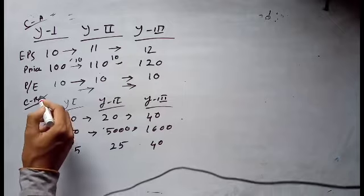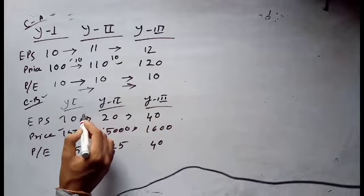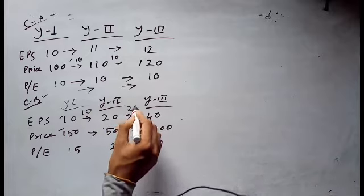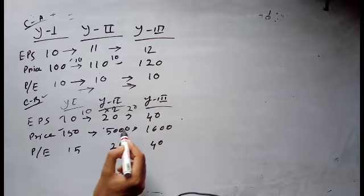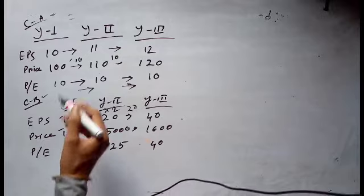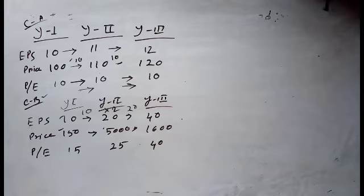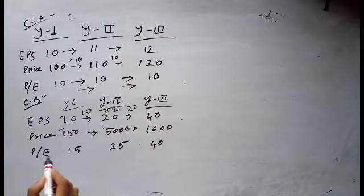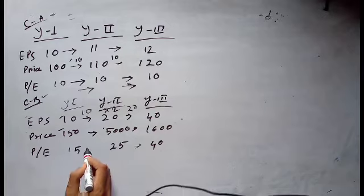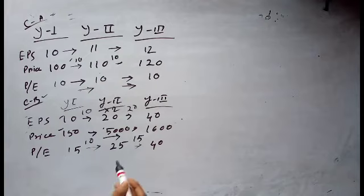For Company B, the earning per share is doubling — ₹10, then ₹20, then ₹40 — increasing at double the rate each year. The share price is also increasing much higher compared to Company A: ₹150, ₹500, and ₹1,600. The PE ratio is also growing — 15, 25, and 40 — increasing by 10 and then 15. You can see how the price earning ratio is maximizing significantly.